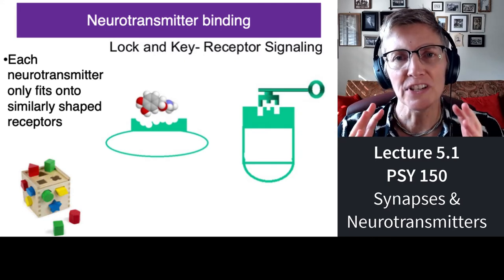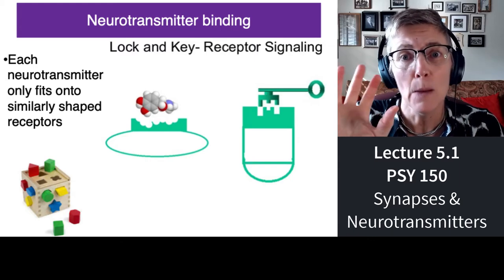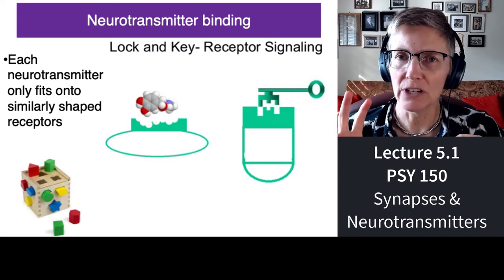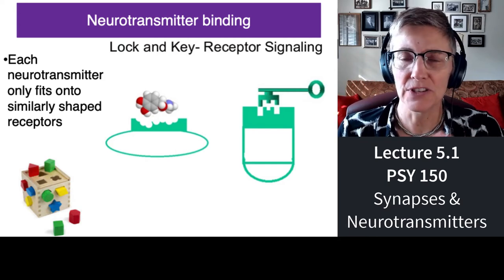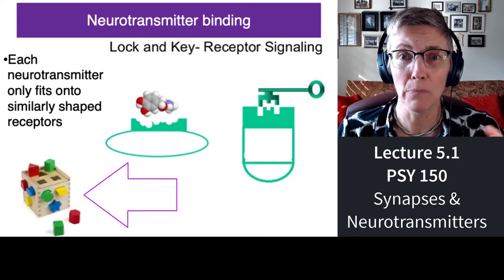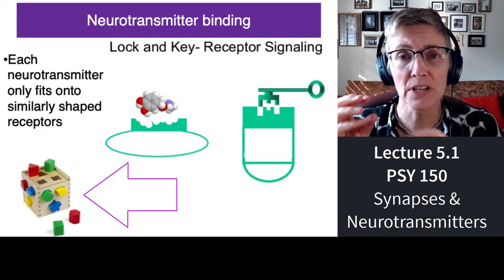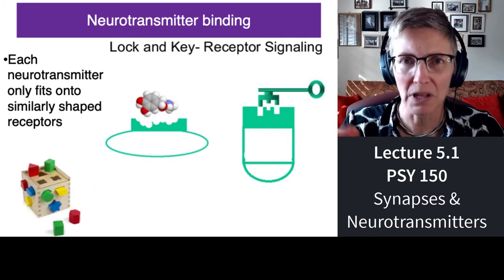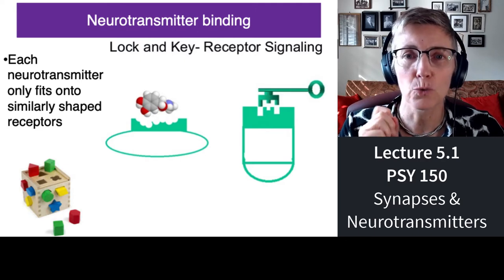The receptors on the receiving end of a neuron are like baseball mitts, but each of them has a different shape. Each receptor can only grab neurotransmitters with the appropriate shape. You can think of it like the childhood game of a wooden box with holes of different shapes and wooden blocks of different shapes — the child figures out what block fits in the circular hole, what block fits in the square hole. Receptors on receiving neurons work the same way.